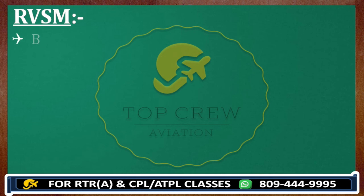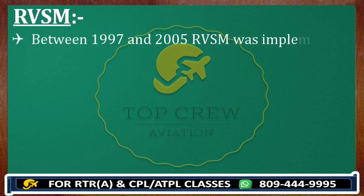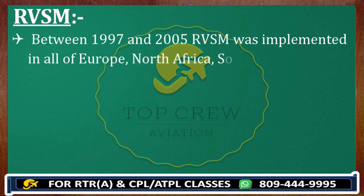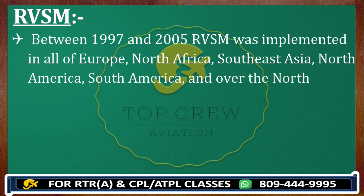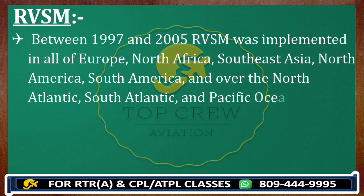Between 1997 and 2005, RVSM was implemented in all of Europe, North Africa, Southeast Asia, North America, South America, and over the North Atlantic and Pacific Oceans. Overall, between 1997 and 2005, it was implemented across the globe.